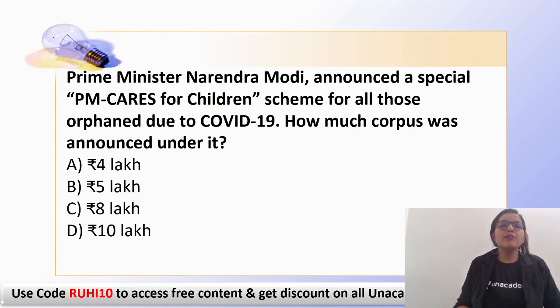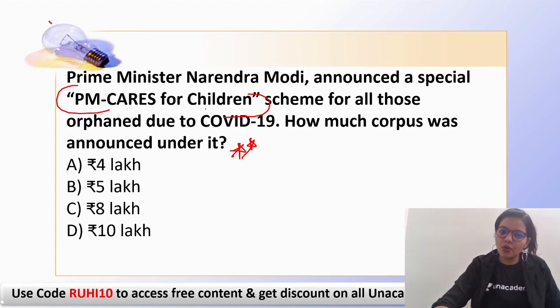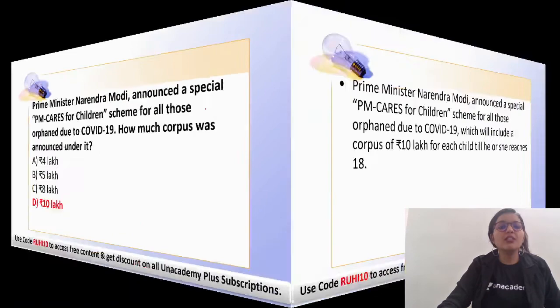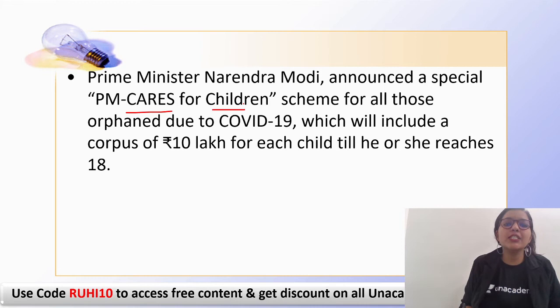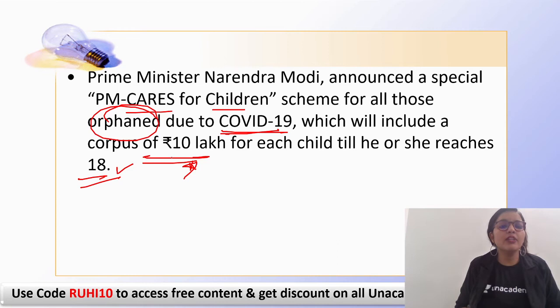Very important question: Prime Minister Narendra Modi announced the PM CARES for Children scheme for orphans who lost their parents due to COVID-19. How much corpus was announced under this scheme? The answer is Rs. 10 lakh. Mark this as a sure-shot question for your examination. A corpus of Rs. 10 lakh will be provided to each child until he or she reaches the age of 18 years.